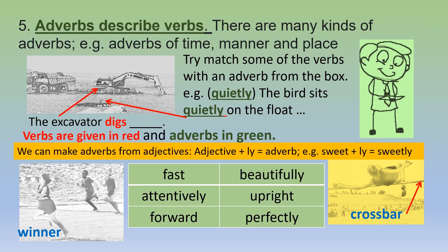Five: adverbs describe verbs. There are many kinds of adverbs — for example, adverbs of time, manner and place. Try and match some of the verbs with an adverb from the box. For example, 'quietly' — the bird sits quietly on the float; the excavator digs fast or forward. We can make adverbs from adjectives: adjective plus -ly equals adverb. For example, sweet plus -ly is sweetly; attentive plus -ly is attentively; beautiful plus -ly is beautifully; perfect plus -ly is perfectly.